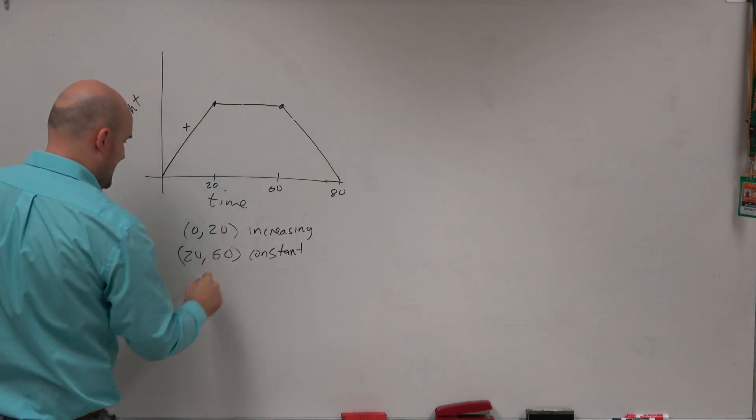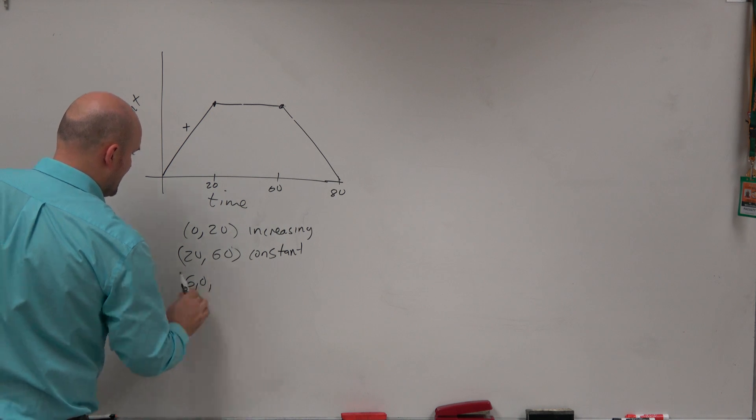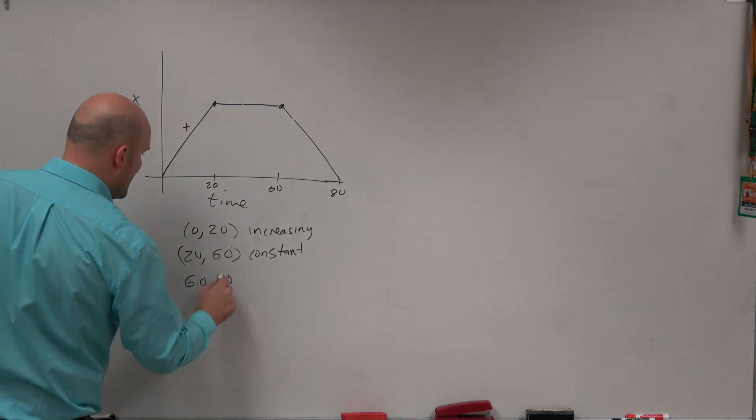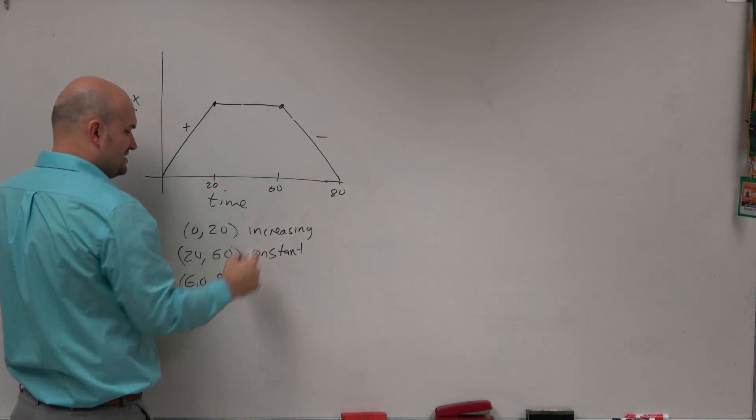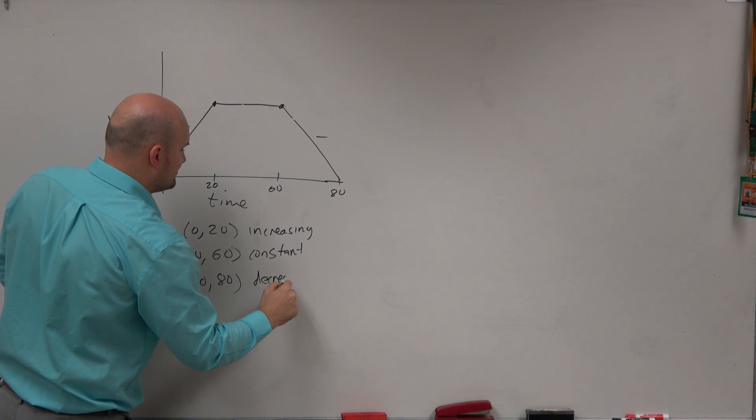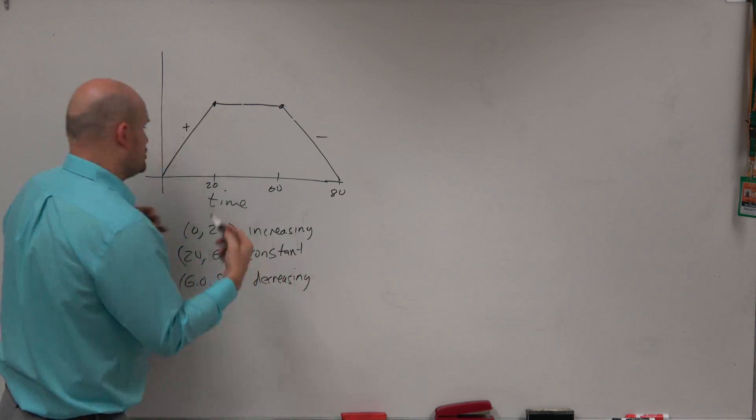And then from 60 to 80, you are going down. The graph is decreasing. So the slope is flat here, decreasing.